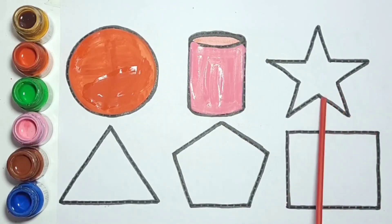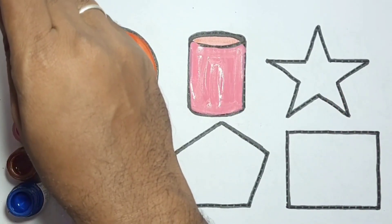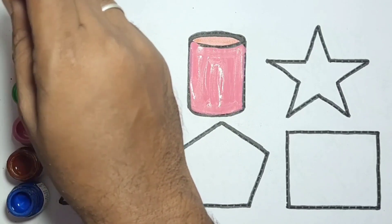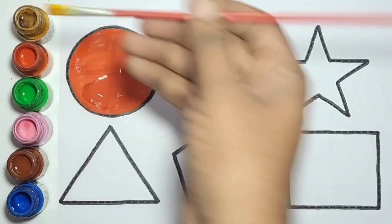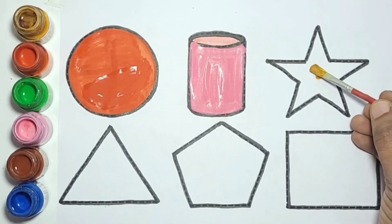This is star shape. We color the shape star with golden color.